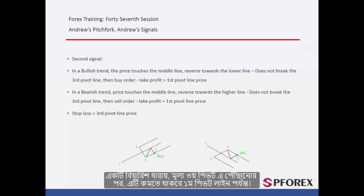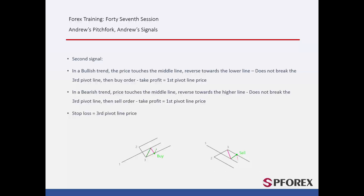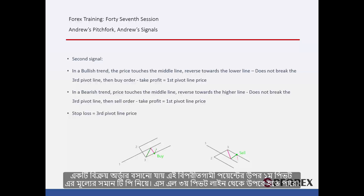In a bearish format, after the price has reached the third pivot, it will decrease until the first pivot line. The price increases towards the third pivot line again. A sell order can be placed on this reversal point with TP equal to the first pivot price. SL can be higher than the third pivot line.